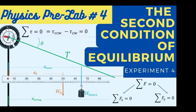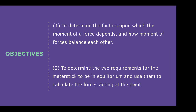Good day everyone. Today we will perform the fourth experiment titled 'The Second Condition of Equilibrium.' The objectives of this experiment are: first, to determine the factors upon which the moment of a force depends and how moments of forces balance each other; and second, to determine the two requirements for the meter stick to be in equilibrium.